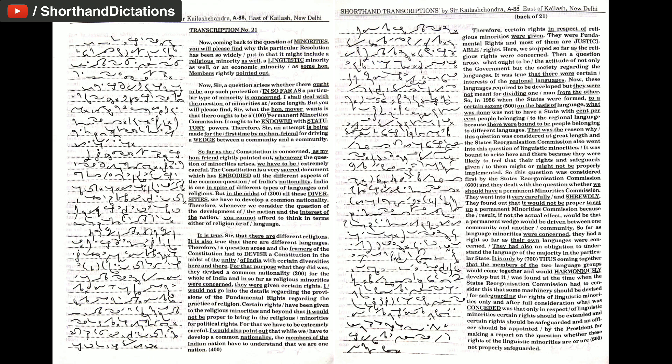when the states were formed to a certain extent on the basis of language, what was done was not to have a state with 100% people belonging to the regional language because there were bound to be people belonging to different languages. That was the reason why this question was considered at great length and the states' reorganization commission also went into this question of linguistic minorities.